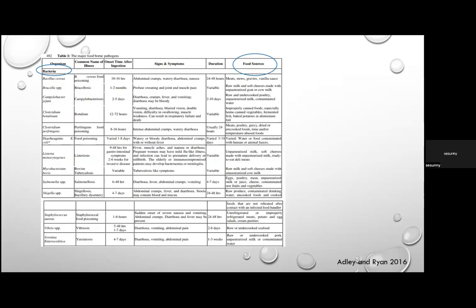A table of major foodborne pathogens lists the food sources associated with each bacteria. This is important when taking an exposure history in patients with diarrhoea — asking about recent food consumption may help identify the likely microorganism, even though there is significant overlap between food sources and organisms.